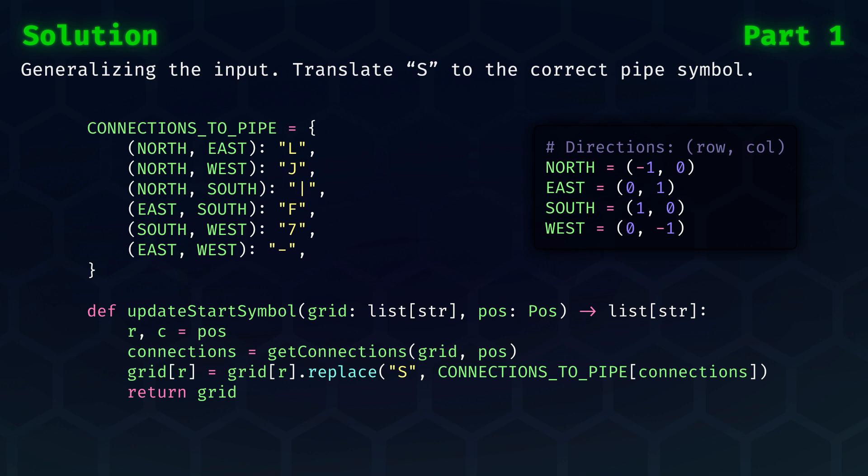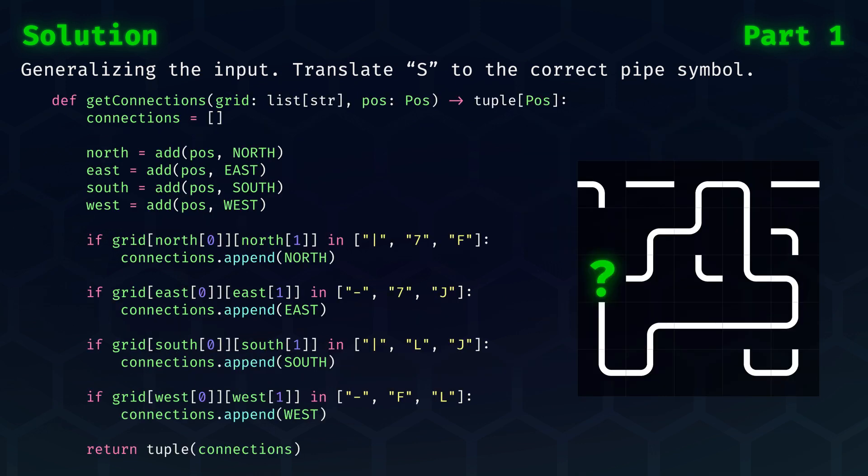For instance, north and south, or east and south. If we have the connections, then the dictionary at the top makes it trivial to get the correct symbol into the grid. Checking for these connections isn't necessarily hard, but the code is a bit verbose. Do you have a better way of doing this? Share it in the comments below.